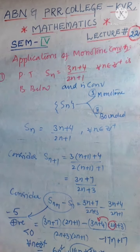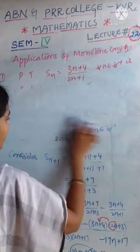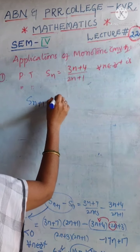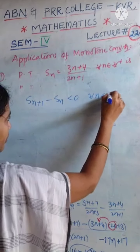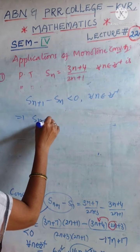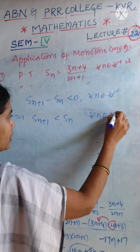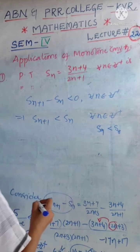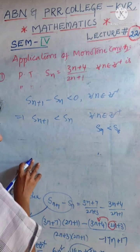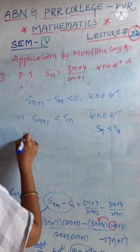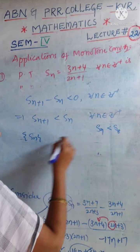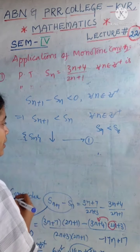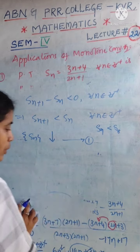Since Sn+1 minus Sn is negative for every n, that means Sn+1 is less than Sn for every n. For example, S9 is less than S8 — bigger-indexed terms are lesser than smaller-indexed ones. This is nothing but a decreasing sequence. Therefore, Sn is a decreasing sequence, which means it is a monotone sequence. First condition satisfied.